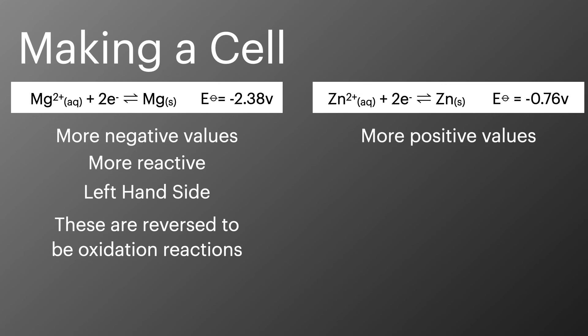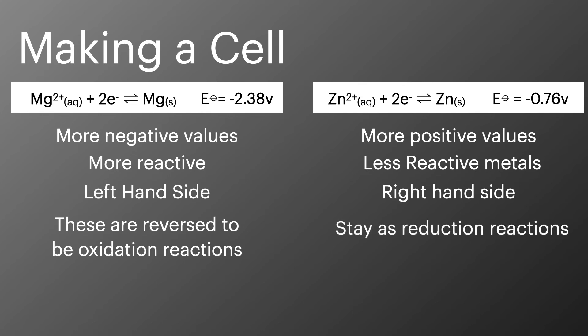The more positive values will be the less reactive metals. We're going to put these on the right-hand side of our electrochemical cell. These will stay as reduction reactions because they're going to gain the electrons from the process.